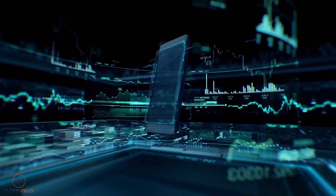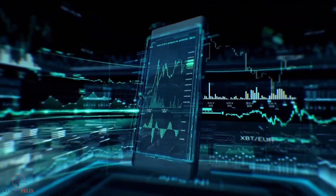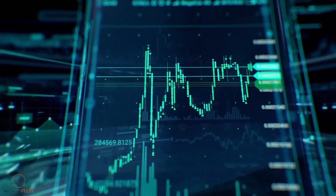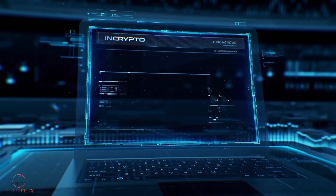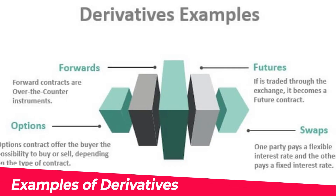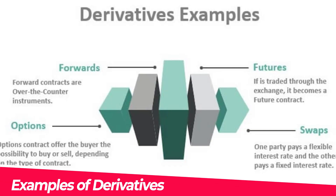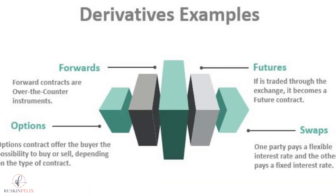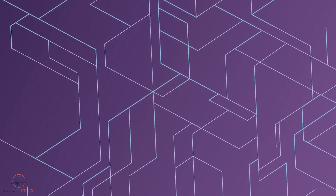Derivative prices are determined by volatility in the underlying asset. These financial instruments are popularly used to gain access to specific markets and can be traded to mitigate risk. Examples of derivatives include option contracts, future contracts, and credit default swaps.